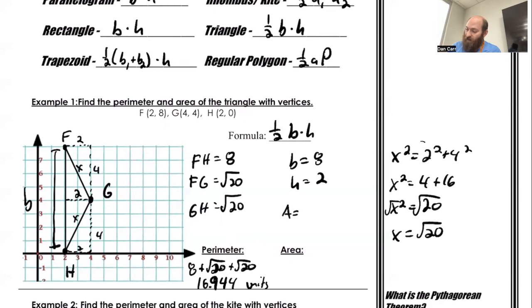So that means my area is one half of the base, which is 8, times the height, which is 2. So I multiply those out. One half times 8 is 4, times 2. My area is going to give me 8 units squared.